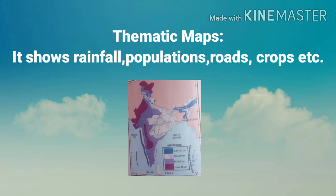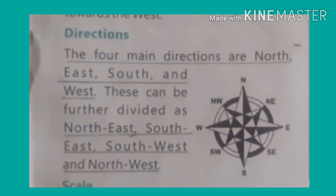Thematic maps show information like rainfall, population, roads, and crops. Now let us see how to read maps. The four main directions are north, east, south, and west. These can be further divided as north-east, south-east, south-west, and north-west.